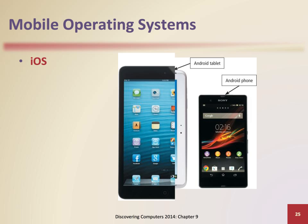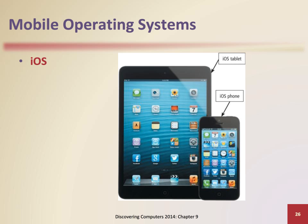Apple's iPhone operating system is a proprietary mobile operating system specifically made for Apple's mobile devices. Proprietary software is privately owned and limited to a specific vendor or computer or device model. Apple's operating system works on the iPhone, the iPod, and the iPad.